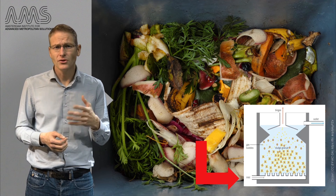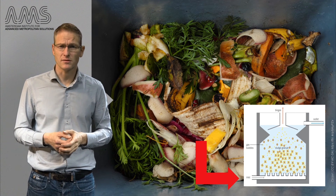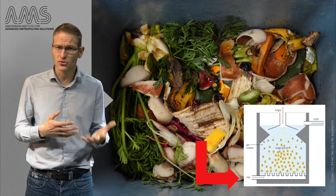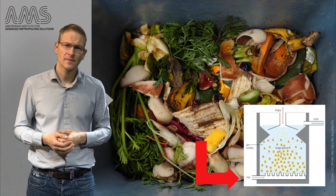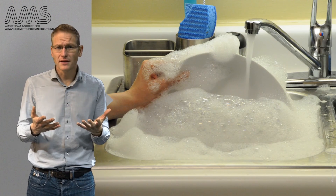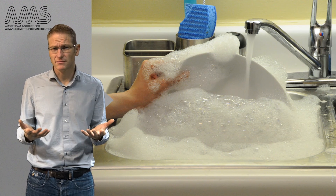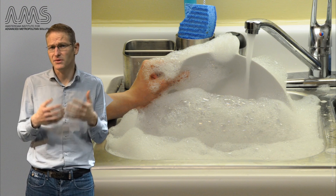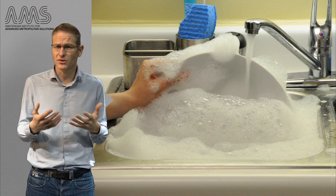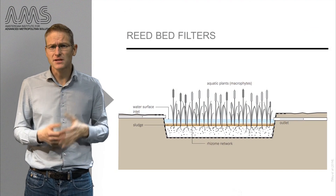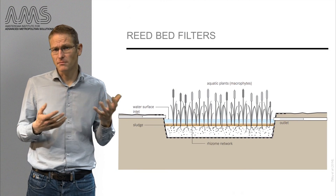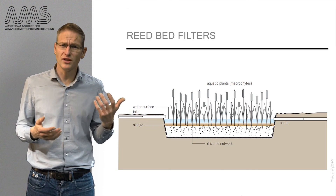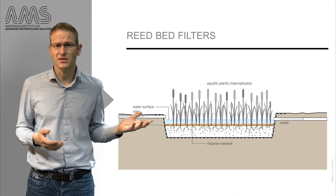Furthermore, you can also add kitchen waste to this process, which does increase your yields of nutrients and biogas. Finally, you can separate the gray water — this is not highly contaminated and can be treated and reused easily. A simple treatment you can make use of is, for instance, the so-called reed bed, as can be seen here.